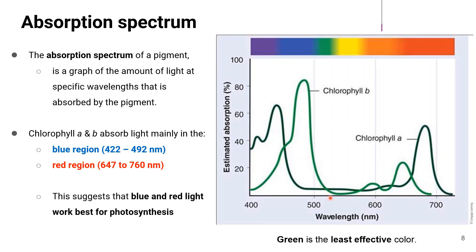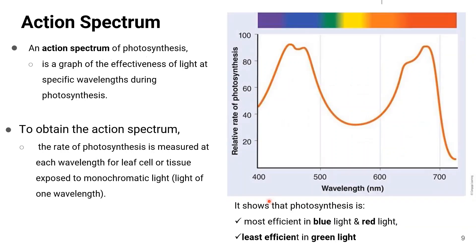Green is the least effective color because there is no high absorption peak seen in that region. In the action spectrum of photosynthesis, the graph shows the effectiveness of light at specific wavelengths during photosynthesis. To obtain the action spectrum, scientists measure the rate of photosynthesis at each wavelength for leaf cells or tissues exposed to monochromatic light — light of one wavelength.